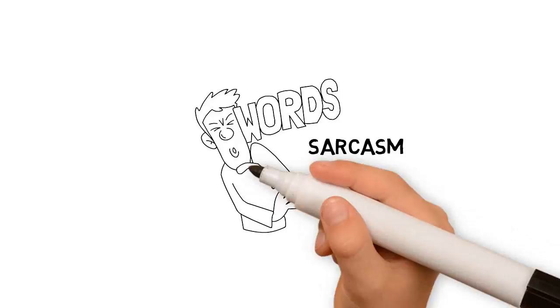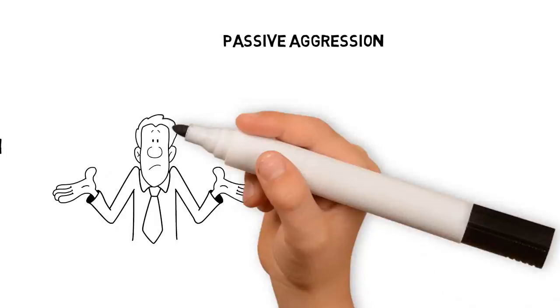Let's take a look at a few characteristics of bad communication. Sarcasm. Your words or tone of voice convey tension or hostility which you aren't openly acknowledging.